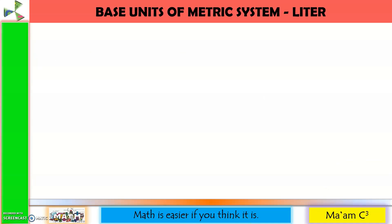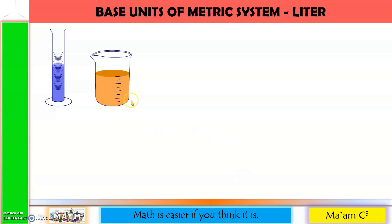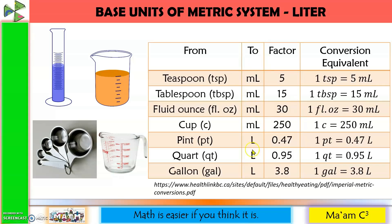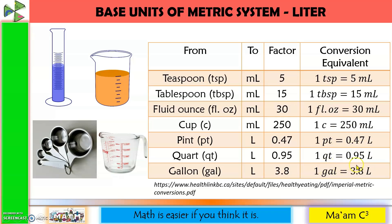Here are common instruments used for measuring volume: a graduated cylinder, commonly used in laboratories; a beaker, primarily used for mixing chemicals but it also has measurement markings; and in the kitchen, measuring cups for dry ingredients and a measuring pitcher for liquids. We can also convert volume from one system to another. Common conversions include: 1 teaspoon = 5 ml, 1 tablespoon = 15 ml, 1 fluid ounce = 30 ml, 1 cup = 250 ml, 1 pint = 0.47 liters, 1 quart = 0.95 liters, and 1 gallon = 3.8 liters.